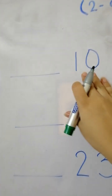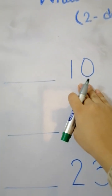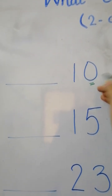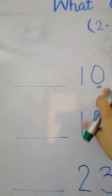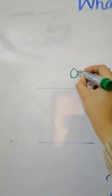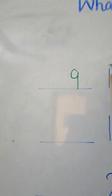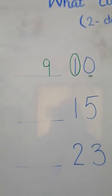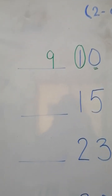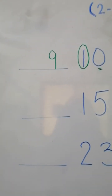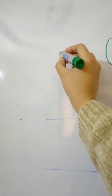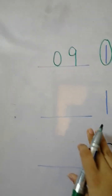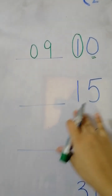Let's practice more. We have number 10. Do we have zero here? Yes, we do. So in the place of zero we will write number nine, and we will do the before number of number one. What comes before one? Zero — very good.